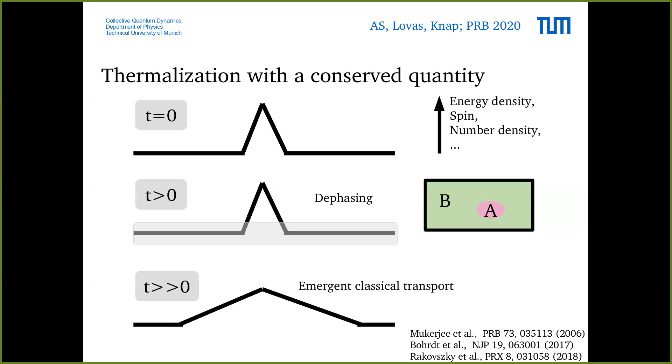This is an exciting thing to study because it's expected to be very generic and every quantum system with conserved quantities should behave that way. But it is very hard to study because this dephasing process comes with a lot of entanglement. There is a sort of entanglement barrier which restricts us from really studying this emergent type of classical transport. Numerical methods like matrix product state methods have a very hard time to reach this regime. What is this emergent classical transport process?